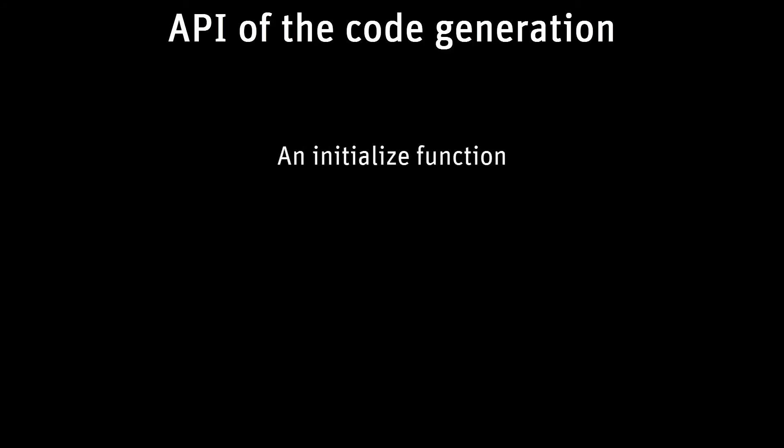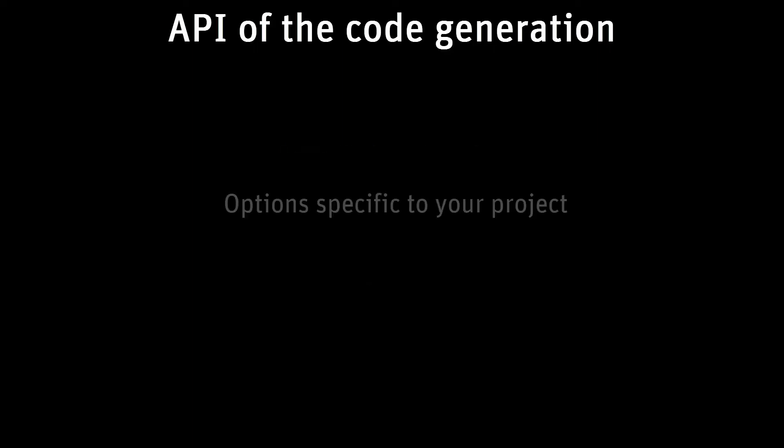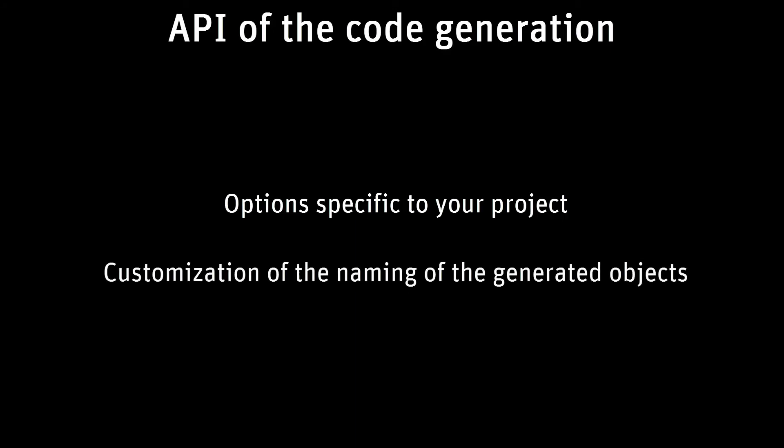The code generation provides a simple API: a function to initiate the model and a cyclic function to run the model. The code can be tuned and can have different kinds of APIs. The code generator enables you to set the options specific to your needs and project. The code can also be customized for names and top-level interfaces.